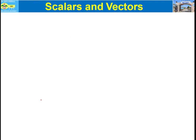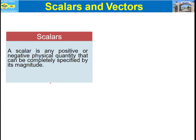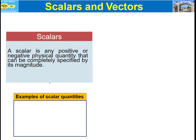First let me start by defining scalars and vectors. A scalar is any positive or negative physical quantity that can be completely specified by its magnitude. Examples of scalar quantities are mass, length, time, volume, temperature, and density.